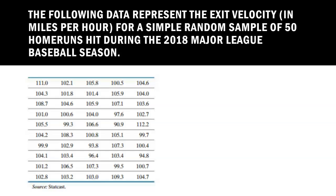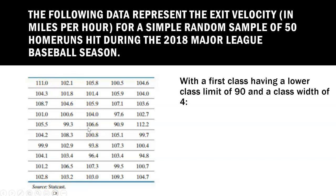The following data represent the exit velocity in miles per hour for a simple random sample of 50 home runs hit during the 2018 Major League Baseball season. This came from StatCast, you see my source at the bottom. This is the data. We want to create a histogram with grouped data with a first class having a lower class limit of 90 and a class width of 4.